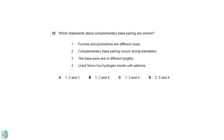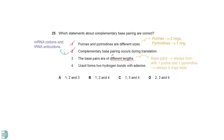One is correct, as purines have two rings while pyrimidines have one ring. Two is correct because the pairing up of mRNA codons and tRNA anticodons occurs during translation. Three is incorrect — base pairs always form with one purine and one pyrimidine, so they are always three rings wide. Four is correct because AT and AU form two hydrogen bonds, while CG forms three.